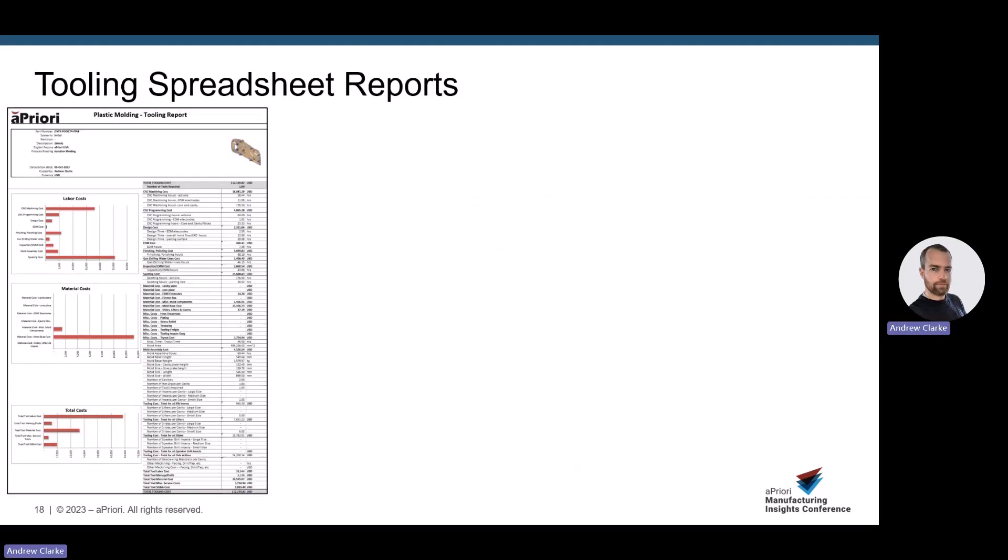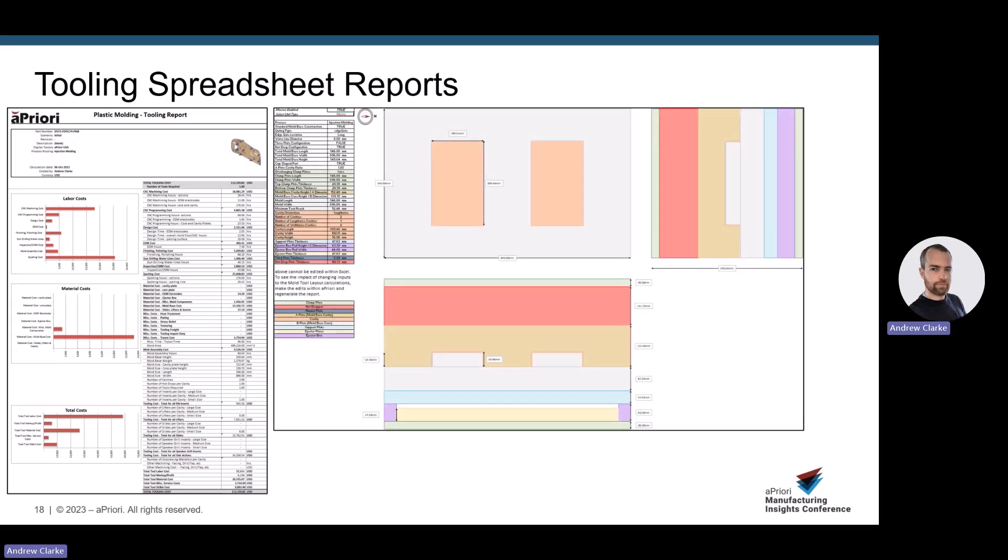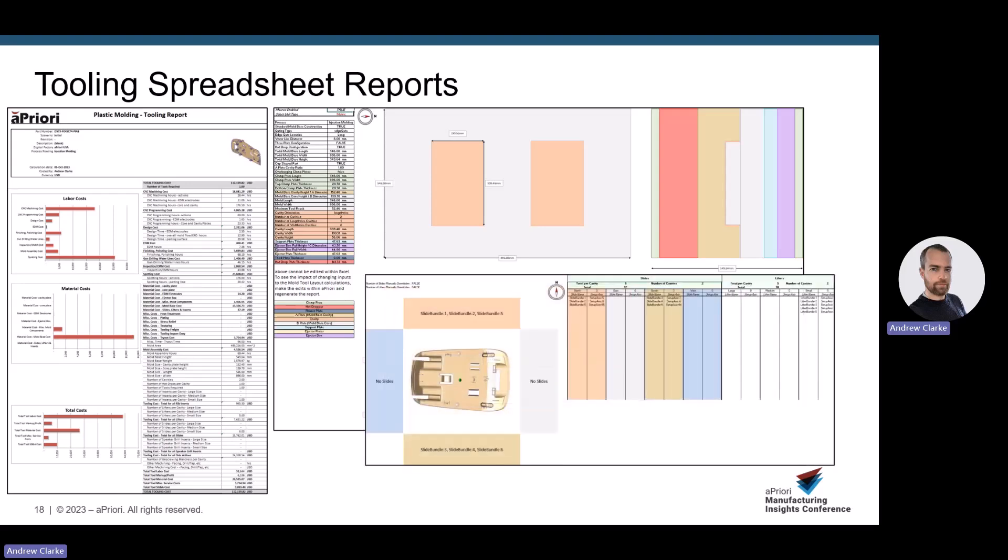We have a tooling report that provides insight into the cost breakdown of the tool, the configuration and parameters of the mold base, as well as details of the tooling actions. This provides a mechanism to share data with colleagues who aren't yet Apriori users and for them to utilize this information during negotiations. Nicola Motors have used these very reports in negotiating on average 20 to 30% savings on purchasing hard tooling.